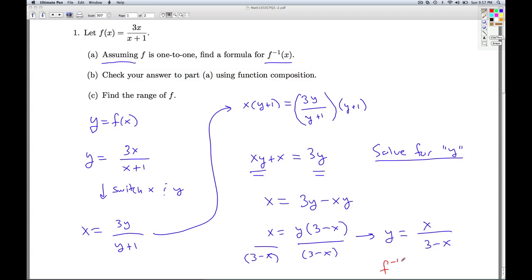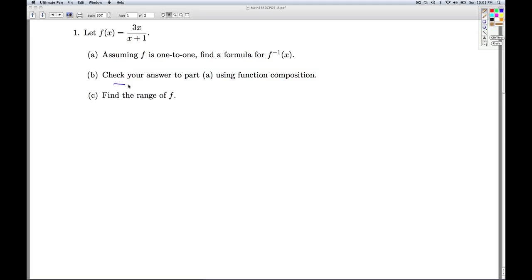And so the claim is that this is the formula for the inverse function. How do we know that's the formula for the inverse function? That's what part b is all about. Part b, we're asked to check our answer to part a using function composition. So our answer we got for part a was x divided by 3 minus x. So how do we check using function composition? Well, we need to check two compositions. We need to check that f inverse composed with f of x works out to be x. And we also have to check the other way around. So let's go ahead and start with this one.